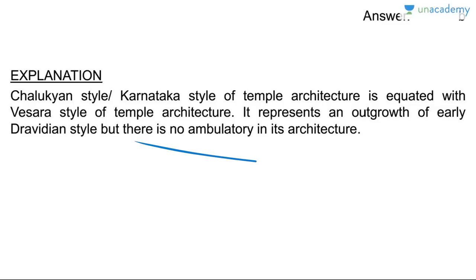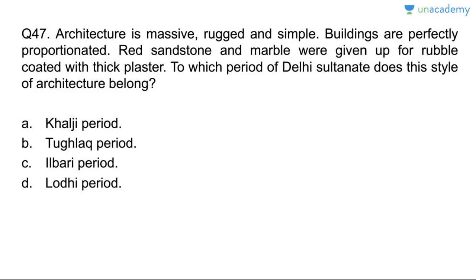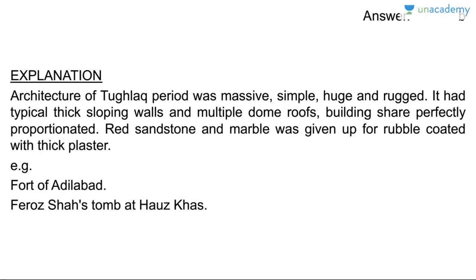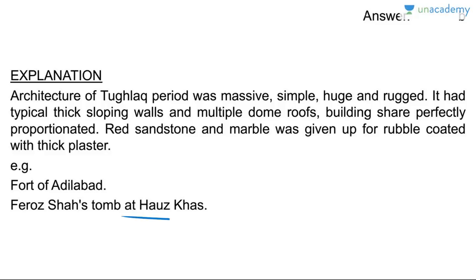Question forty-seven: architecture that is massive, rugged, and simple; buildings are perfectly proportioned; red stone and marble were given up for rubble coated with thick plaster — to which period of the Delhi Sultanate does this belong? The Tughlaq period. Architecture of the Tughlaq period was massive, simple, huge, and rugged, with thick sloping walls and multiple dome roofs. Examples include Fort of Adilabad and Feroz Shah's Tomb.